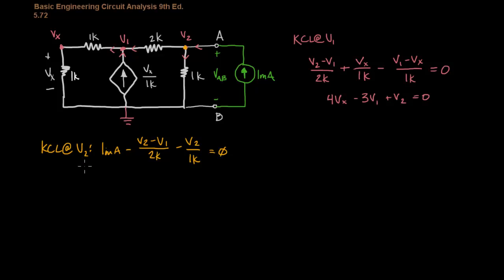And now I can simplify that and put it in the same order as this equation here, and I get minus 3V2 plus V1. Oops, that's not right. So, plus V1 minus 3V2 equals negative 2.